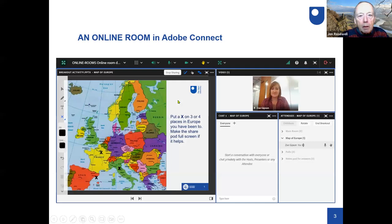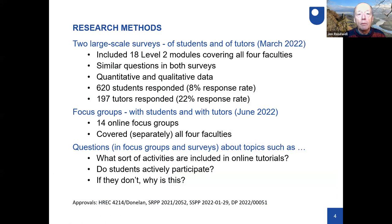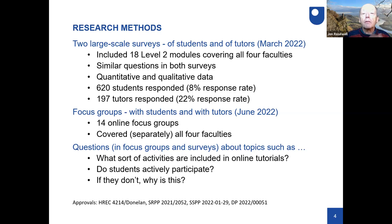Now looking at research methods. We did two surveys — one for students and one for tutors on matching courses. We chose students in the middle of their degree so they had some experience of tutorials, and we went right across the university. Similar questions were given to both surveys, producing a lot of quantitative and qualitative data. The response rate was relatively low from students, so it may not be fully representative. We also did focus groups. The core questions were: what sorts of activities do students participate in, and if they don't, why not?